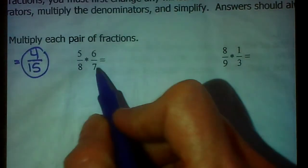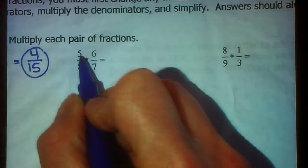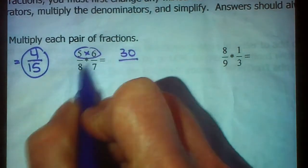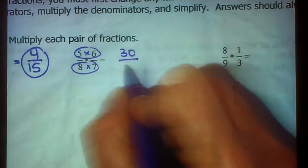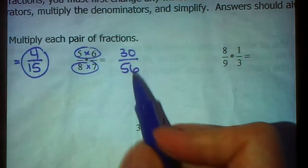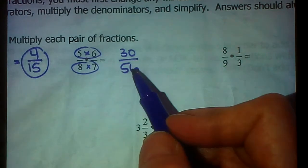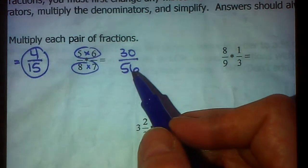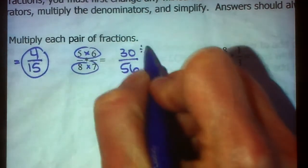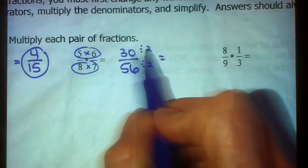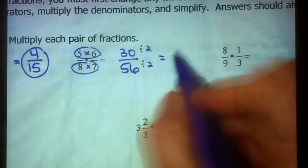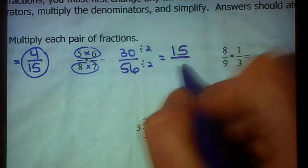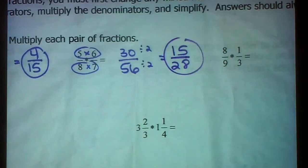We have 5 eighths times 6 sevenths. So multiply across the top. 5 times 6 is 30. Multiply across the bottom. 8 times 7 is 56. Now I'm looking at 30 and 56. The largest number that they have in common, that divides into both of them, is, do you have it? It's 2. So we're going to divide each by 2. 30 divided by 2, or half of 30, would be 15. And 56 divided by 2, or half of 56, is 28.